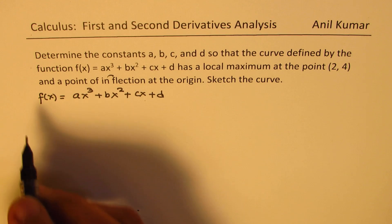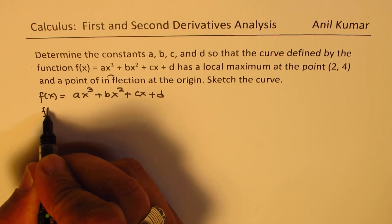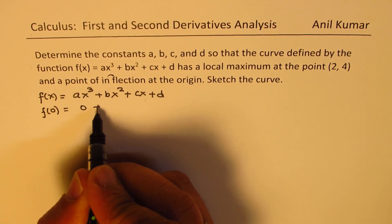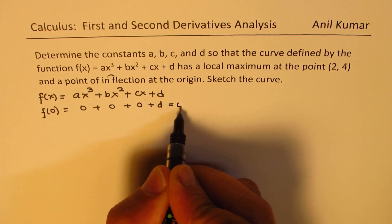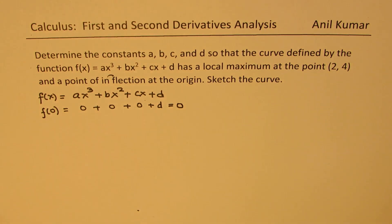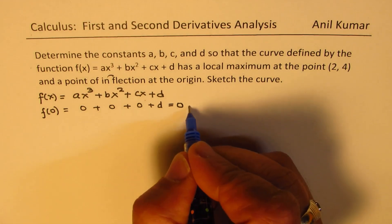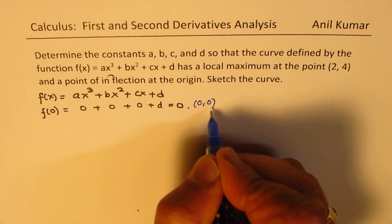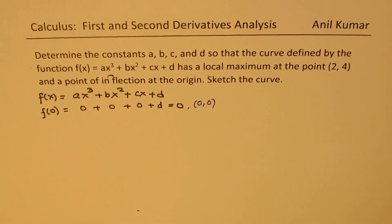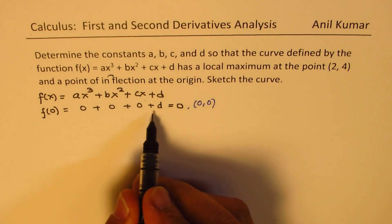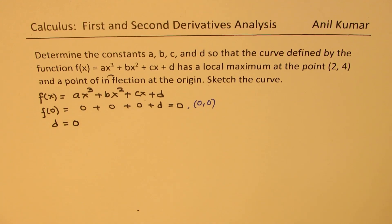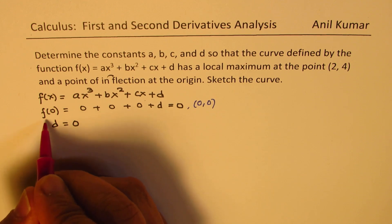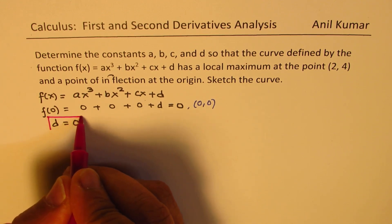So let's substitute 0 here. So at f(0), the value will be 0 + 0 + 0 + d, and that should be equal to 0. Since we are substituting the point origin (0, 0) into our function, clearly that gives you the value of d as equal to 0. So from one of our conditions, we get the value of d as equal to 0.